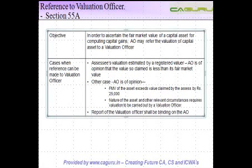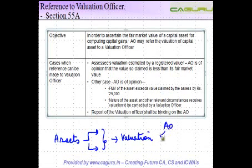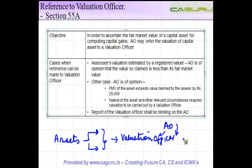A reference to a valuation officer can happen in cases where circumstances arise requiring a valuation to be referred. Because of the nature of the asset, its complexities, or certain other circumstances, a by-assess valuation may need to be carried out by an expert other than the assessing officer. The AO may refer the matter to the valuation officer, but to ensure this power is not exercised indiscriminately, there are specific guidelines and circumstances under which such a reference can be made.